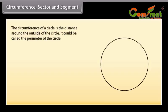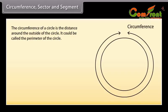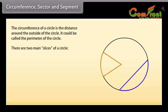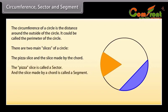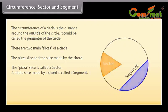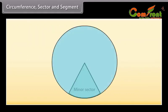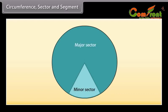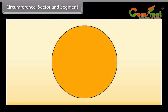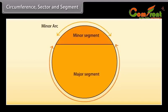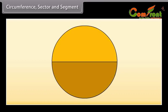Circumference, sector, and segment. The circumference of a circle is the distance around the outside of the circle — it could be called the perimeter of the circle. There are two main slices of a circle: the pizza slice and the slice made by the chord. The pizza slice is called a sector, and the slice made by a chord is called a segment. There are two types of sectors: the minor sector and the major sector. Similarly, there are two types of segments: the minor segment and the major segment. When both arcs are equal, these two are called semicircles.